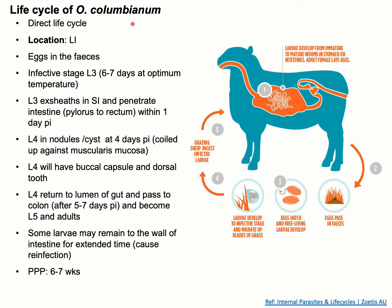The life cycle of Oesophagostomum columbianum is direct — there is no involvement of an intermediate host. The adult male and female are found in their predilection site, the large intestine. The female parasite lays eggs, which are passed through the feces.